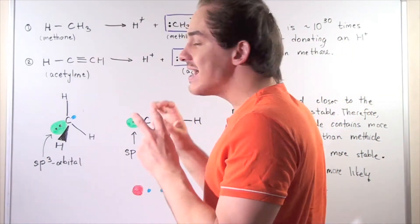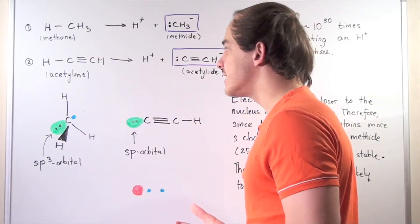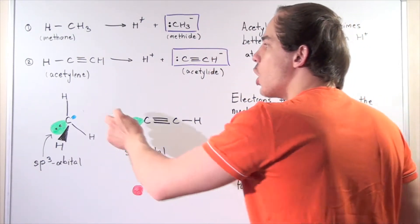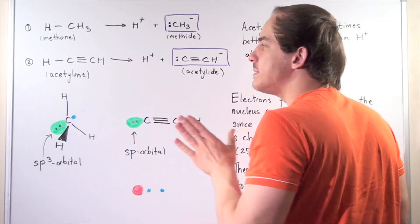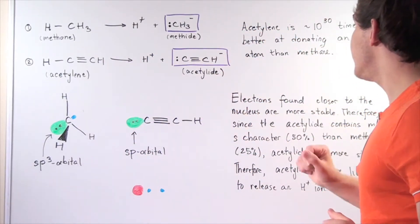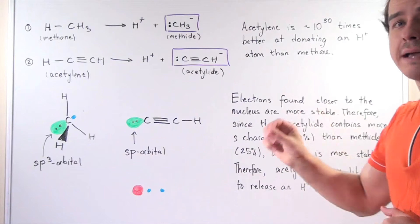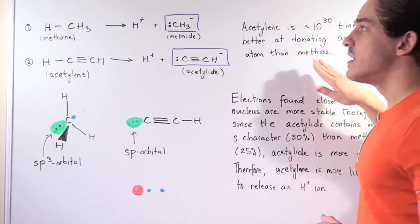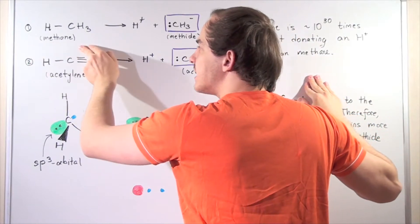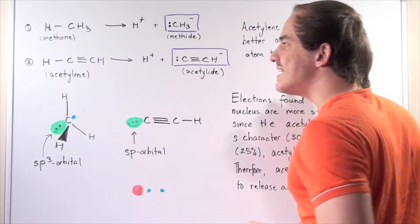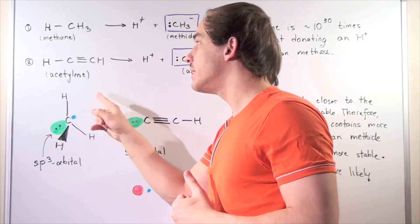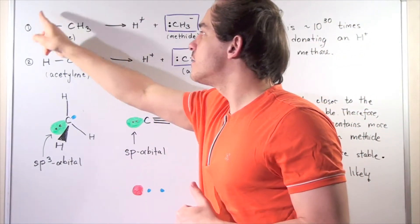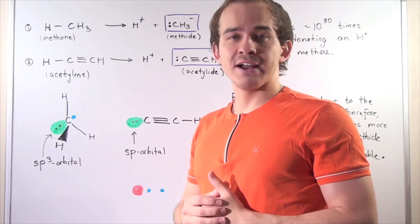So which one of these reactions is more likely to occur — which acid is a better acid? From experimental results, we know that acetylene is a better acid. In fact, acetylene is 10 to the 30 times better at donating an H⁺ atom than methane. Why is that?